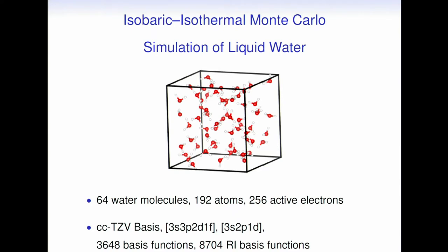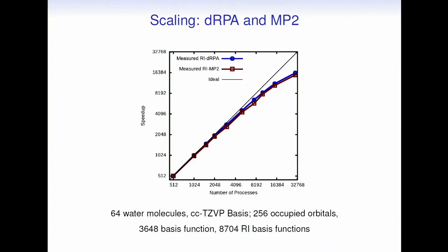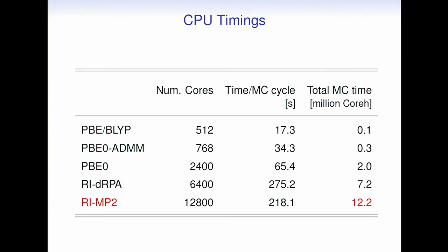Now, applying these methods. Our system: we are doing isobaric, isothermal Monte Carlo simulations of liquid water with 64 molecules (192 atoms). The basis set is a correlation-consistent triple-zeta valence basis set, roughly 3,500 basis functions; the RI basis is 8,700 basis functions. These methods are very expensive, but also relatively easy to parallelize — parallelization up to several tens of thousands of cores is very efficient for this specific system.